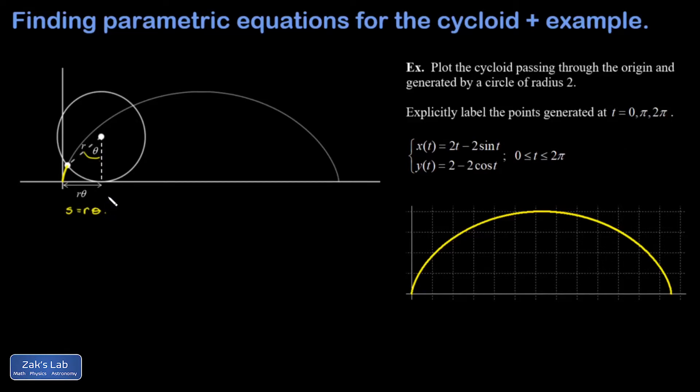If it's rolled through an angle of theta, then the actual horizontal distance it's moved is equal to s, and that's r theta. The center of the circle now has the coordinates r theta for its x coordinate and r for its y coordinate, because it's one radius above the x axis.